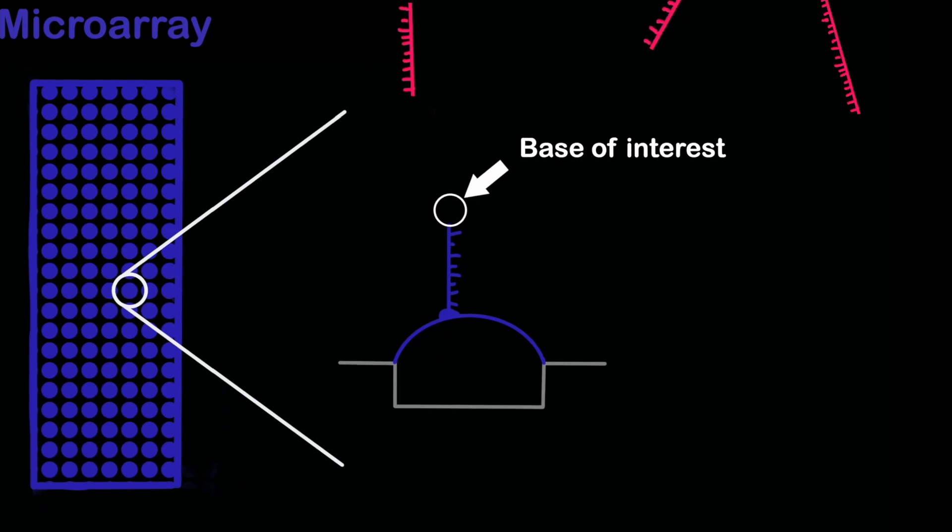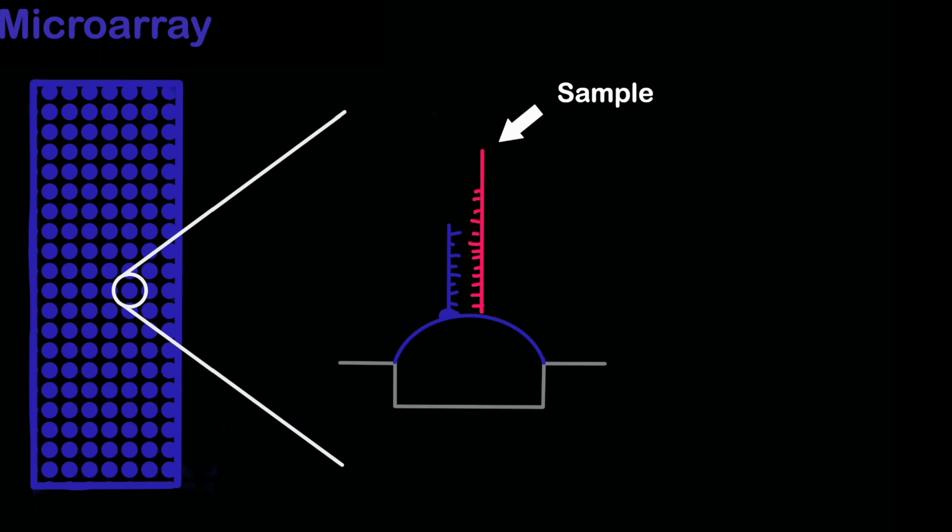The sample DNA is broken into small pieces and washed over the microarray. When the sample DNA complements the oligonucleotide probe, it binds to it. Then, when the microarray is washed with the four label bases A, T, G, and C, the base that complements the sample DNA is added.